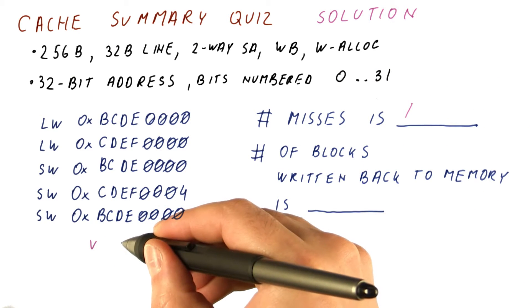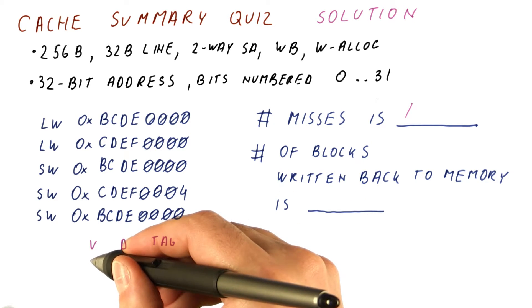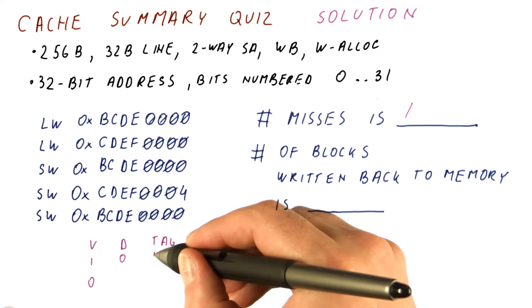Now the valid, dirty, and tag bits in the set are going to be one here and zero here. Dirty is zero, and the tag is B, C,